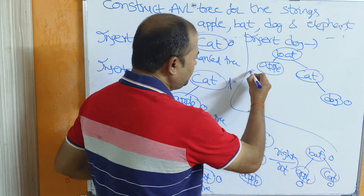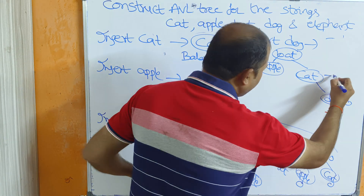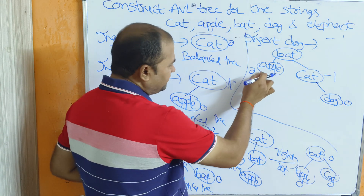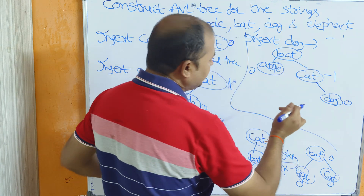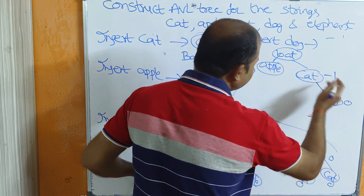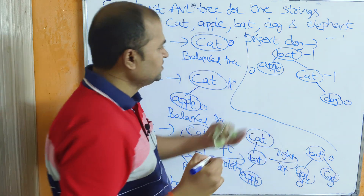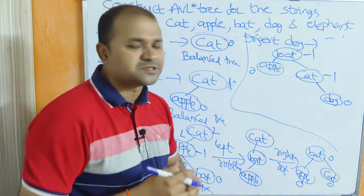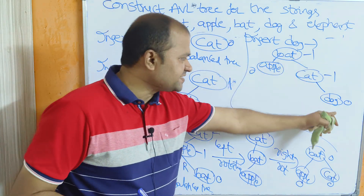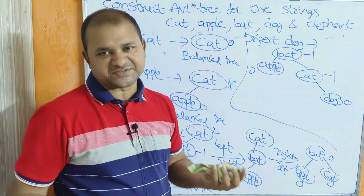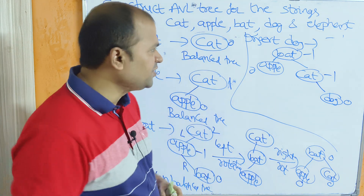For apple the balance factor is 0. For cat: left subtree height is 0, right subtree height is 1, so balance factor is -1. For bat: left subtree height is 1, right subtree height is 2, so 1 minus 2 equals -1. This tree is balanced because all balance factors are 0 or -1, so no rotation is needed.